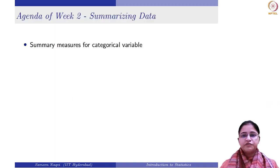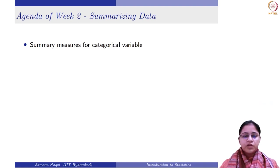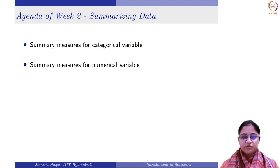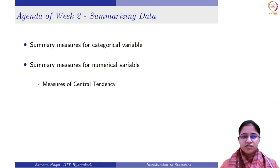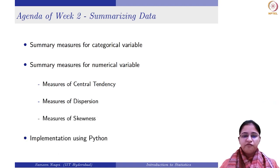Since there are two different types of variables — categorical and numerical — we will begin this week with the summary measures for categorical variables. Then we will move on to the summary measures for numerical variables, where we will learn about the measures of central tendency, measures of dispersion, measures of skewness, and finally we will implement these concepts using Python. So let us begin with the summary measures for categorical variables.